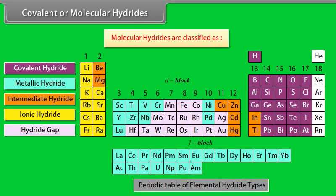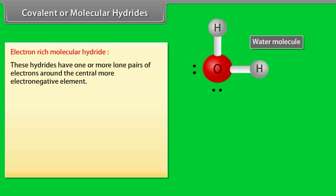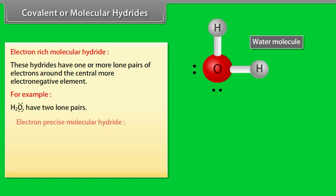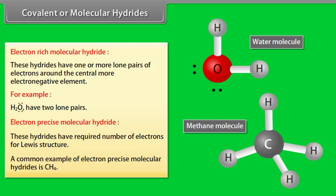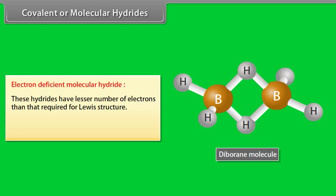Covalent or molecular hydrides are classified as: Electron-rich molecular hydride. These hydrides have one or more lone pairs of electrons around the central more electronegative element. For example, water has two lone pairs. Electron-precise molecular hydride. These hydrides have required number of electrons for Lewis structure. A common example of electron-precise molecular hydride is methane. Electron-deficient molecular hydride. These hydrides have lesser number of electrons than that required for Lewis structure. A common example of such molecular hydride is diborane.